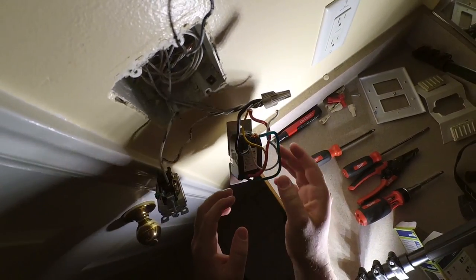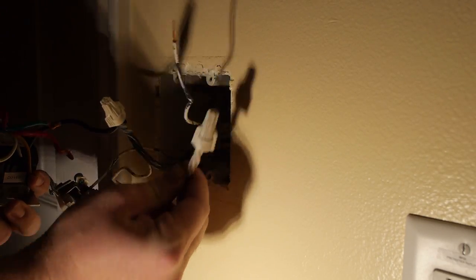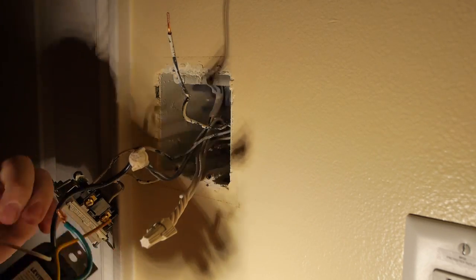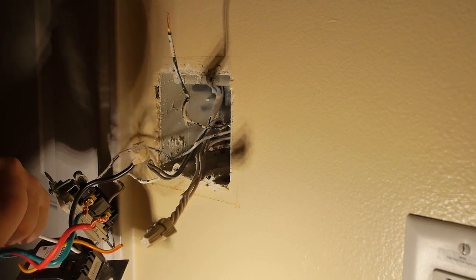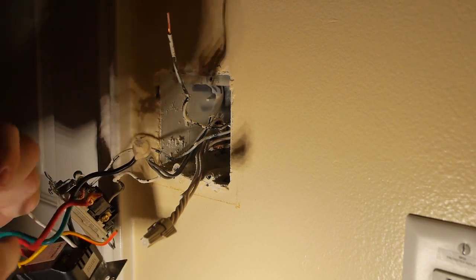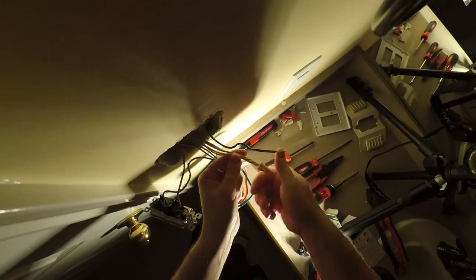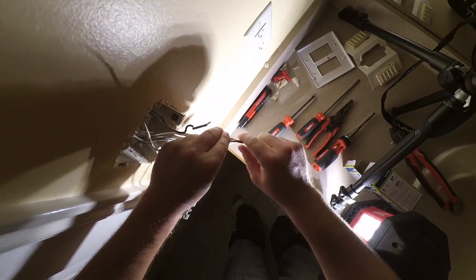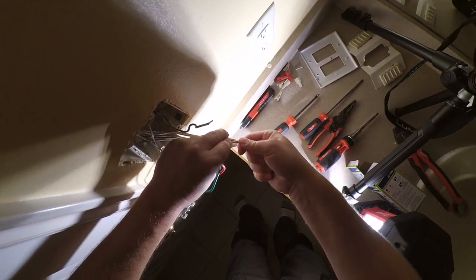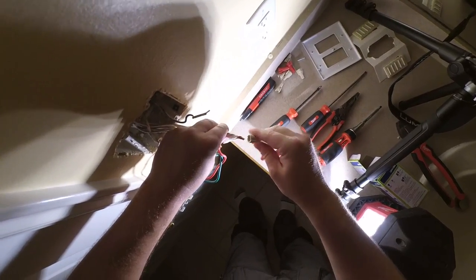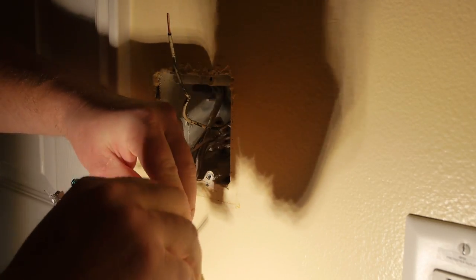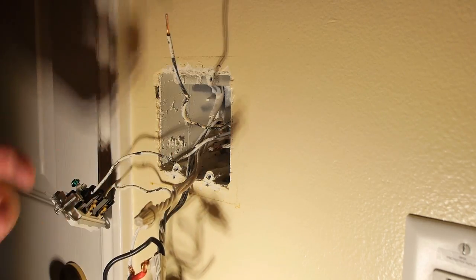Now what I want to do next are these other guys that are tucked back in here. So the white wire, that's the neutral and this switch needs a neutral. Most switches do not, but this switch is fancy. So undo the wire nut. Wrap that around there a little bit. Put this back on. That's done.